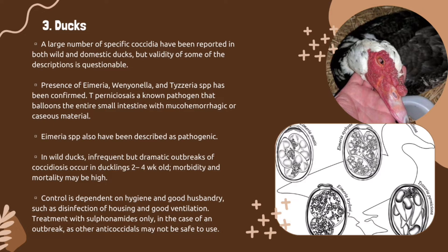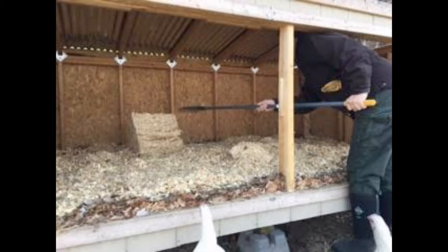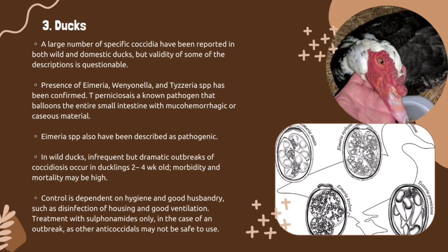In wild ducks, infrequent but dramatic outbreaks of coccidiosis occur in ducklings two to four weeks old, where mortality may be high. For control, management is dependent on hygiene and good husbandry such as disinfection of housing and good ventilation. Treatment with sulfonamides is used only in the case of an outbreak, as other anti-coccidials may not be safe to use.